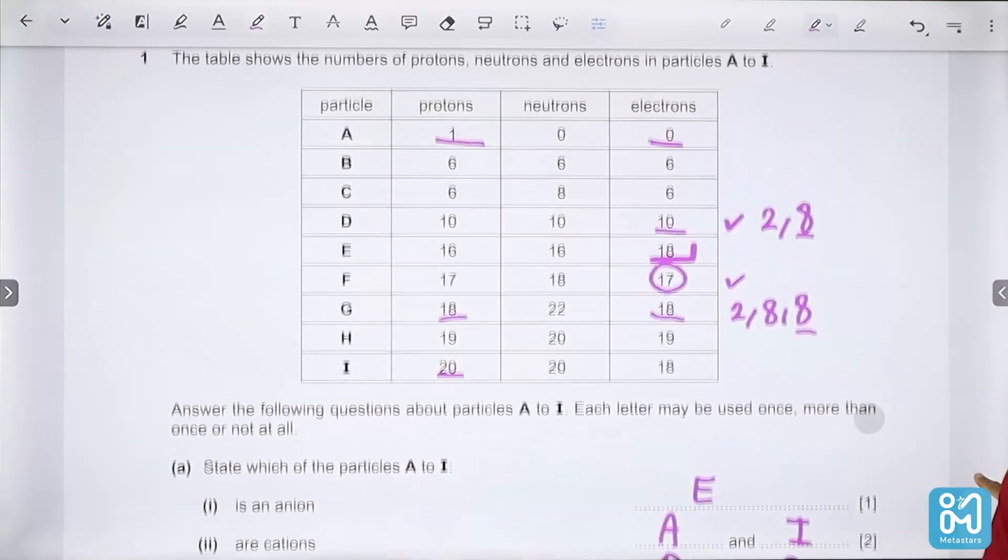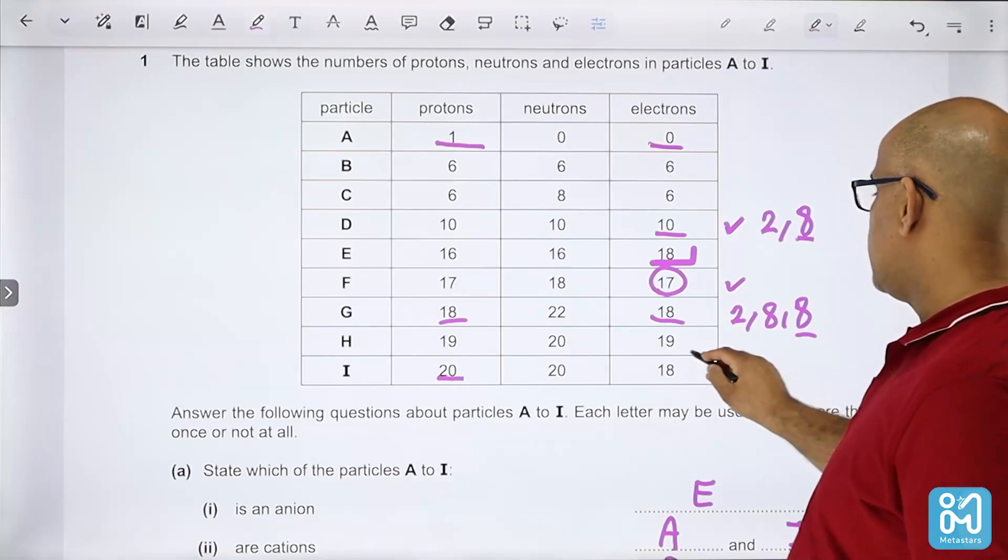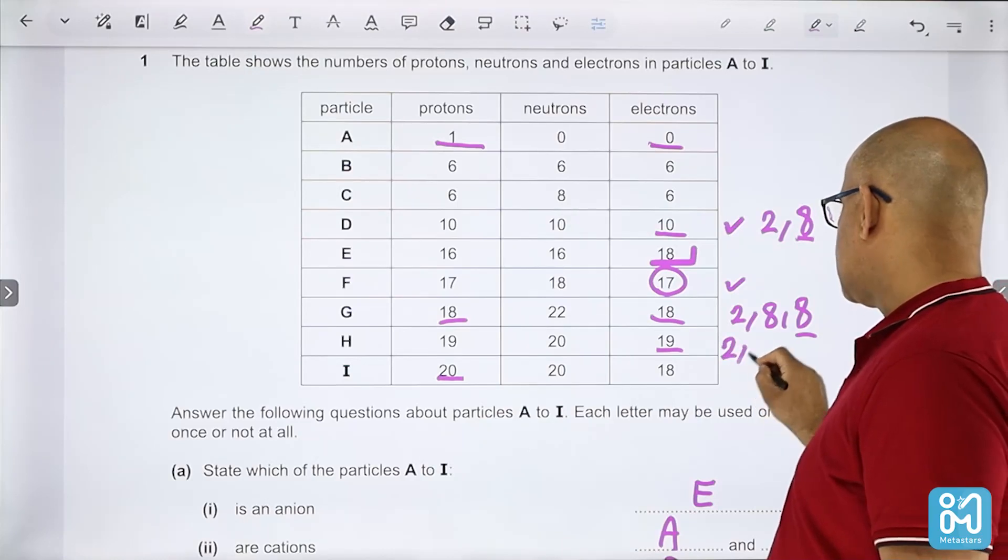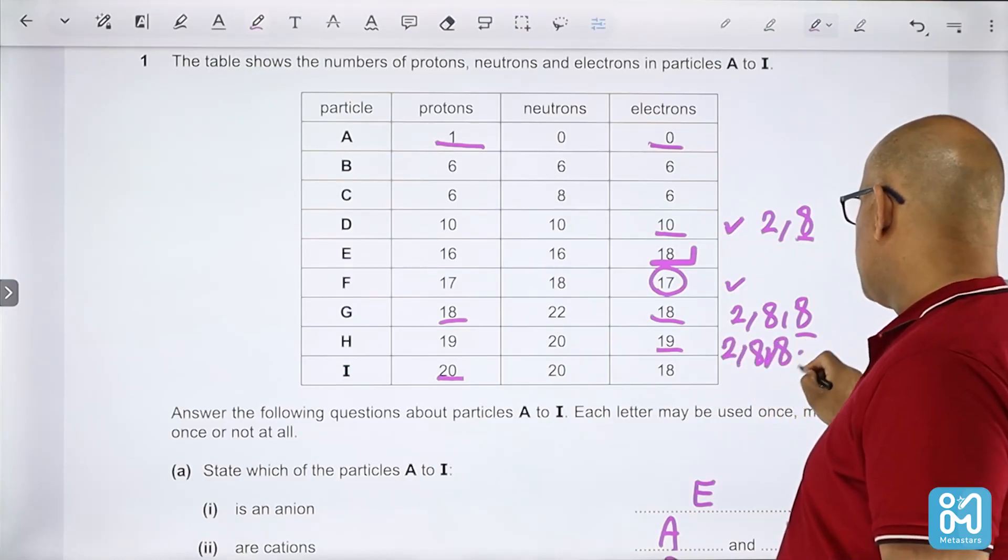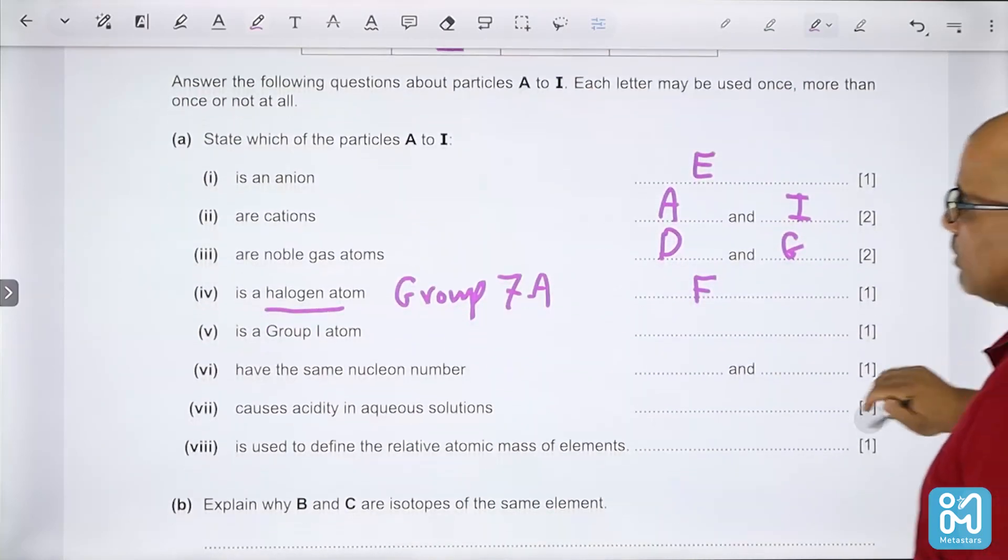It's a group 1 atom. Group 1 atom has only one electron in its outer shell, so 2-8-1. So H is from group 1.